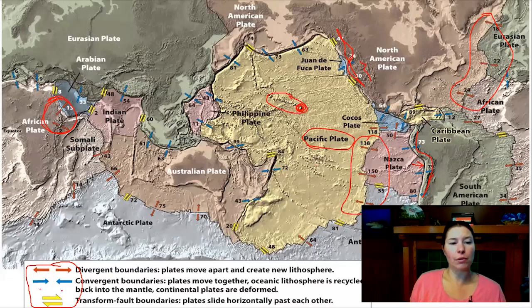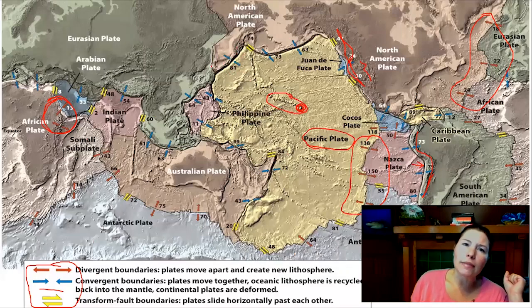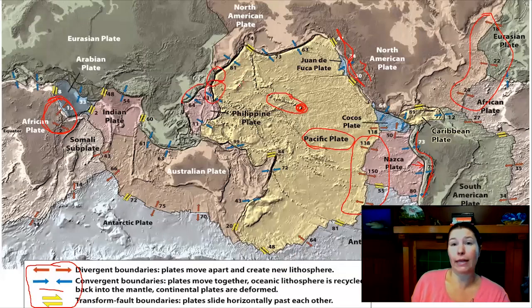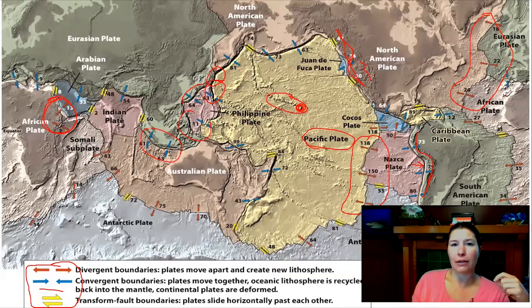Along the blue arrows are subduction zones where oceanic crust dives down and is swallowed up, remelted, and recreated—these are also our deep-sea trenches. The Marianas Trench is here, and the Japanese islands form at a big subduction zone. Indonesia, the Philippines—none of these would exist without subduction zones and their volcanoes. Where oceanic crust dives under a continent, that creates mountains and volcanoes on the continental edge—the Cascade Range of North America and the Andes of South America are perfect examples.